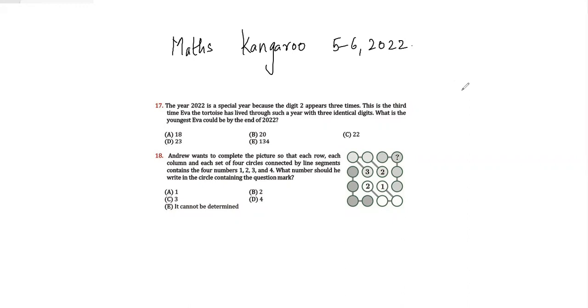The year 2022 is a special year because the digit 2 appears three times. This is the third time Eva the tortoise has lived through such a year with three identical digits. What is the youngest Eva could be by the end of 2022?